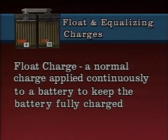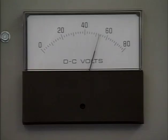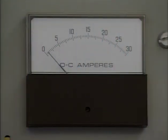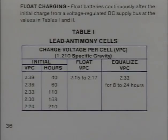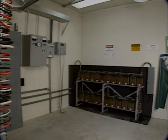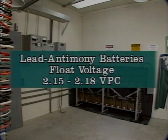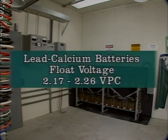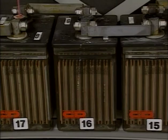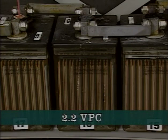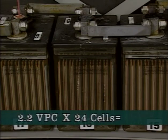A float charge is a normal charge applied continuously to a battery to keep it fully charged. The voltage is floated at a fixed level slightly above the normal open-circuit voltage of the battery, allowing the battery to draw just enough current to overcome its self-discharge losses and maintain a full charge. A general float voltage guideline for lead antimony batteries is 2.15 to 2.18 volts per cell; for lead calcium batteries, the guideline is 2.17 to 2.26 volts per cell. For the lead calcium battery in this example with a float voltage of 2.2 volts per cell, the total float output voltage is 2.2 × 24 = 52.8 volts.